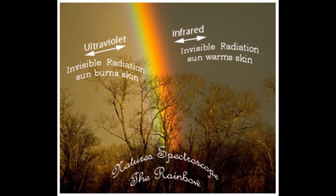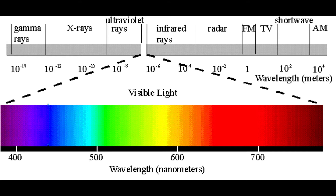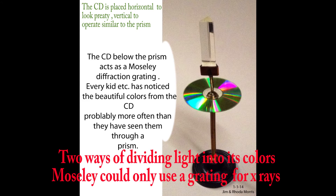The spectroscope: different atoms when heated create different flame colors in the visible spectrum. When made very, very hot they give off X-rays. A spectroscope can tell you a lot about an atom — how hot it is, which element it is, what atomic number it is, how fast it is traveling, and more. Mosley chose to look at the X-ray spectrum of the elements to see what he could learn from them. As a physicist, he learned a lot about chemistry.